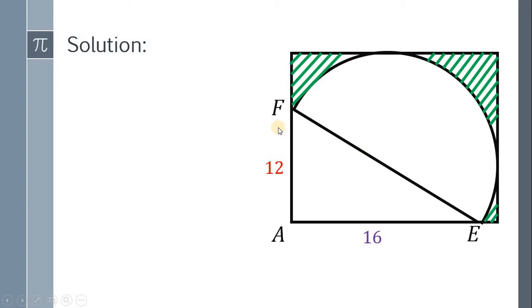To find the measure of EF, we will use Pythagorean theorem. We have EF squared is equal to AE squared plus AF squared. Therefore, EF equals the square root of 16 squared plus 12 squared. 16 squared is 256 plus 144 equals 400, and the square root of 400 is 20. Therefore, EF is equal to 20.